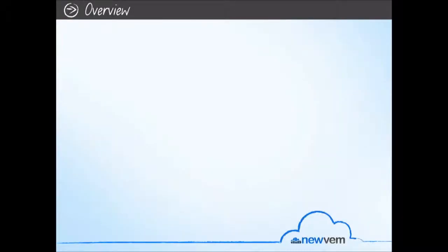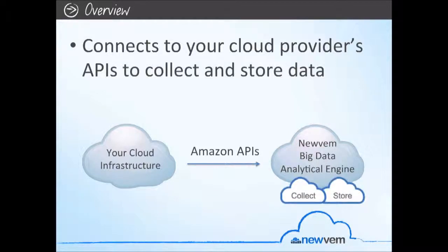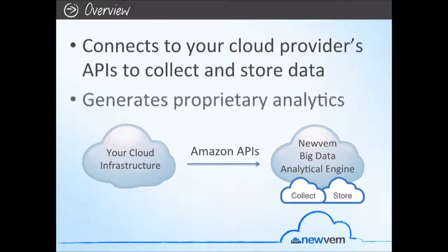NewVim is an analytical service that uses big data to provide insight into your cloud deployment. NewVim Analytics first connects to your cloud provider's APIs to collect and store your operational data. Then it learns from your usage patterns from the bottom up. This data collection is done from NewVim's own servers, so no overhead is required on your own instances. After collecting and storing your usage data, NewVim generates proprietary analytics on the data to identify user-specific insights, creating a baseline of your cloud infrastructure.